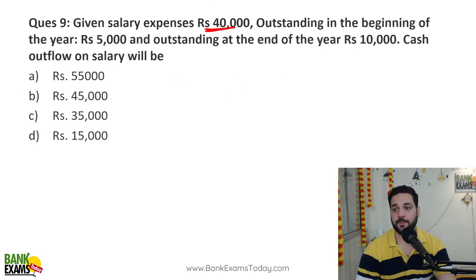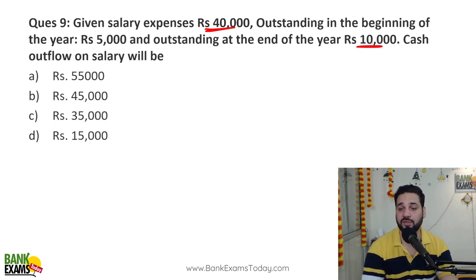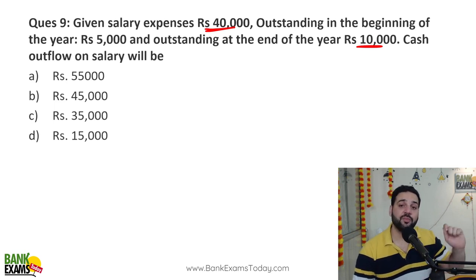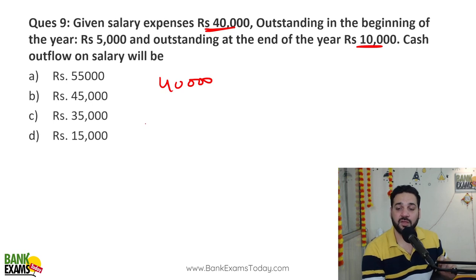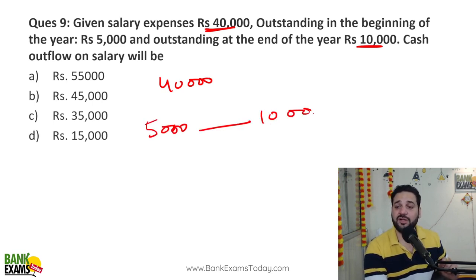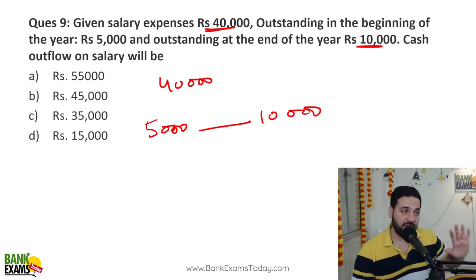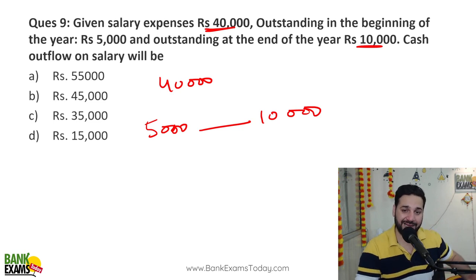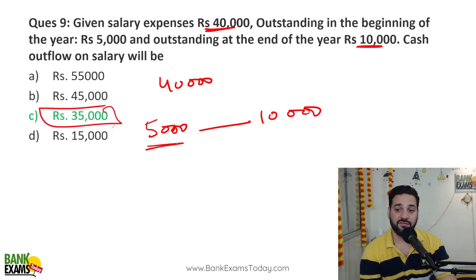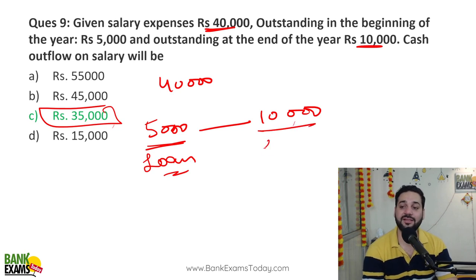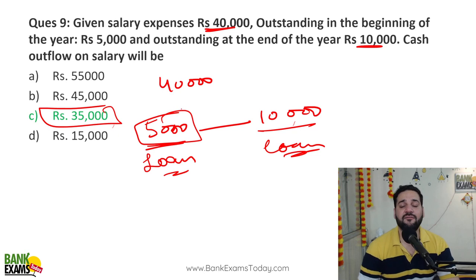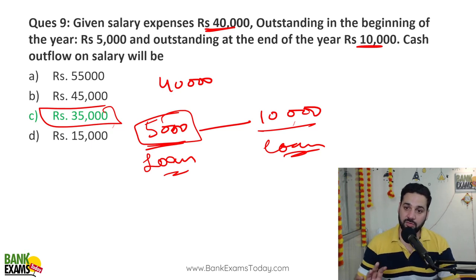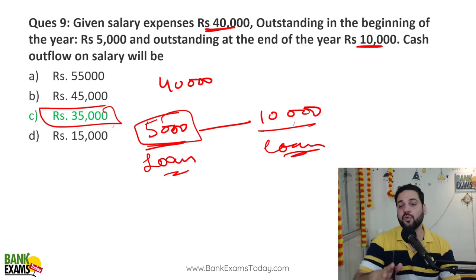Salary expense is 40,000. Outstanding salary in the beginning of the year is 5,000 and outstanding at the end of the year is 10,000. The salaries you pay during the year are 40,000, but in the beginning 5,000 was due and at the end 10,000 is due. In the beginning 5,000 rupees payment was pending to employees, and now 10,000 is pending. So as a business you actually paid 35,000 in cash — salary expense is 40,000, but 5,000 additional is still due, so cash paid is 35,000.